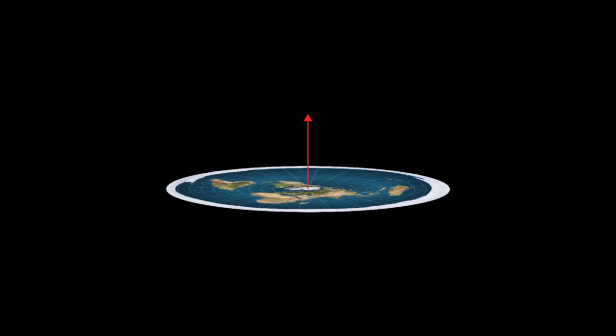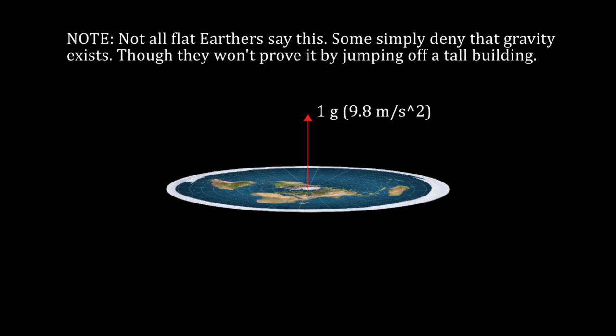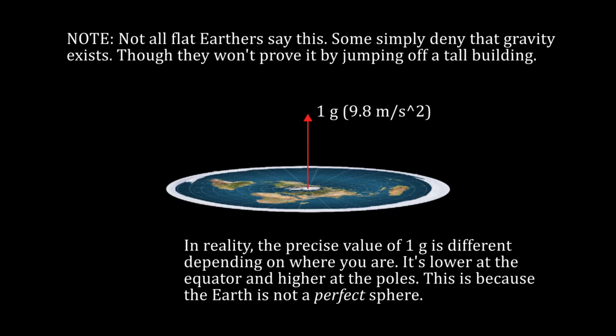While on the subject of magic, that's what flat-earthers would have to cite in order to explain why gravity behaves the way it does. They will argue that the Earth, and presumably everything else in the universe, accelerates upwards at 1g. This fails to explain why everything in the universe behaves as though massive bodies attract each other. It also fails to explain why gravity is weaker at high altitude and near the equator. This is of course because the strength of gravity depends on the distance to the center of mass, which isn't the same everywhere on the Earth's surface since it's not a perfect sphere. And it definitely isn't the same if you're a significant distance above the surface either.